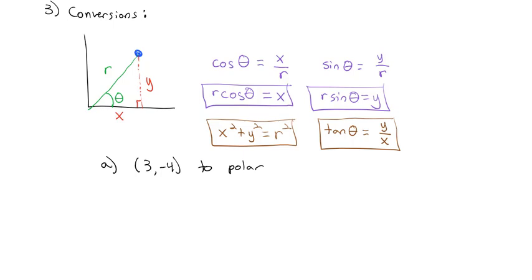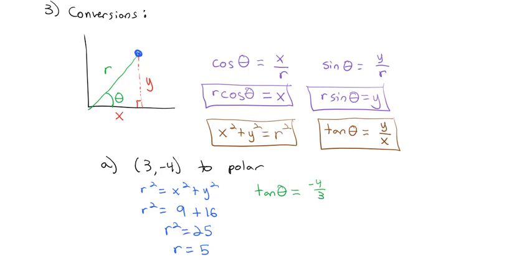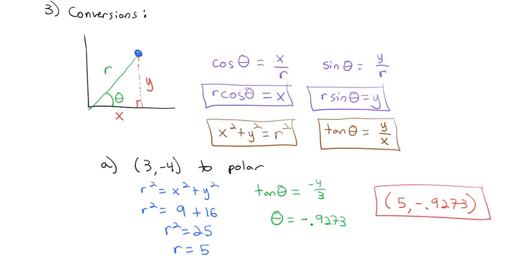We've got x and y, so we know r squared equals x squared plus y squared. So r squared equals 3 squared, which is 9, plus 4 squared, which is 16. So r squared is 25 and our radius must be 5. We also know that the tangent of the angle equals y over x, which is negative 4 over 3. Taking the inverse tangent of both sides, we get approximately negative 0.9273. So we end up with the polar coordinate (5, negative 0.9273), which is equal to the rectangular point (3, negative 4).